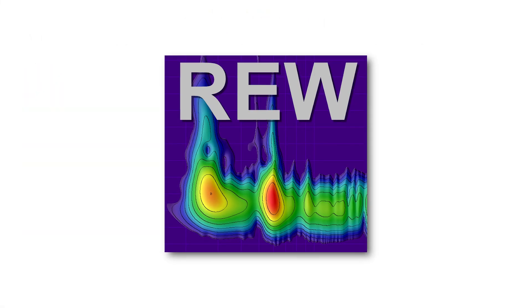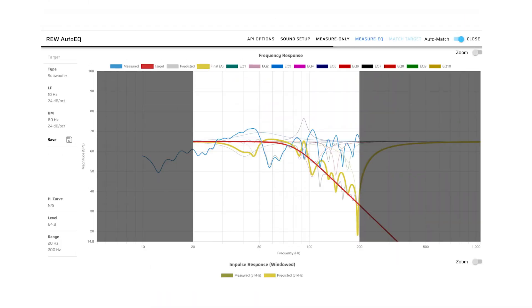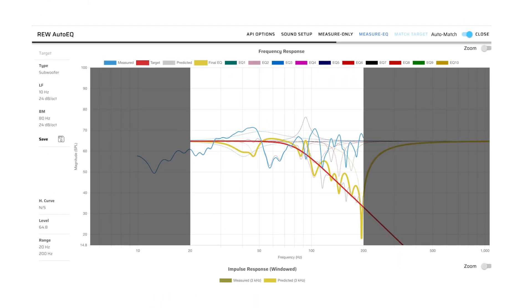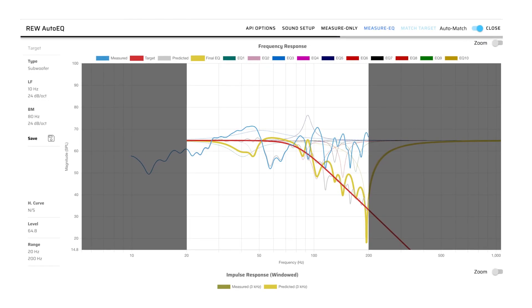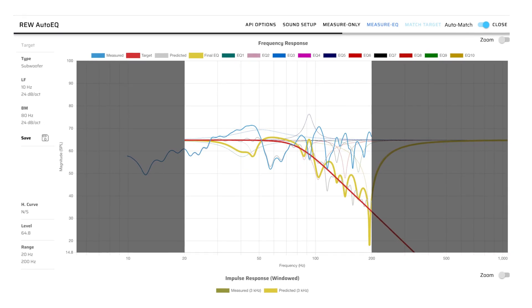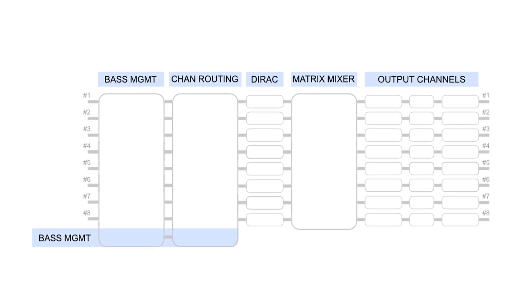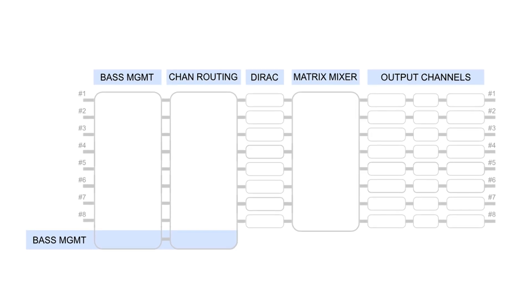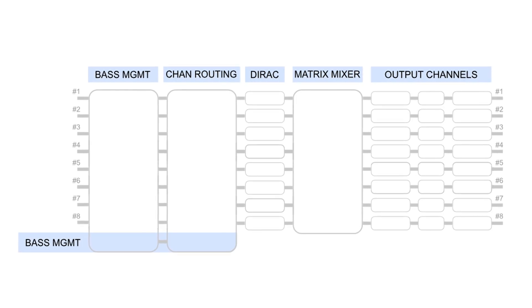The optional REW AutoEQ feature provides a simplified measurement and equalization tool for users to gain quick room correction results. REW AutoEQ is launched from within the relevant PEQ block in Device Console. When AutoEQ is performed, REW calculates a correction EQ based on the measurement and displays the result. Using a signal flow diagram, you can easily plan your system layout before actual implementation. It also helps you spot potential problems and work through solutions. A blank template is available through the link in the description below.